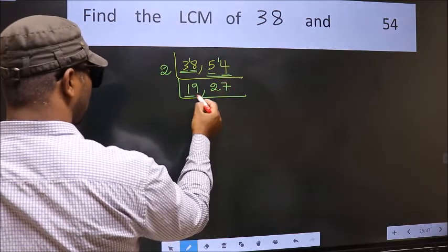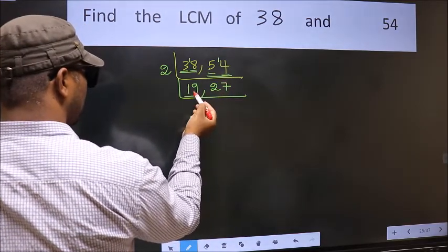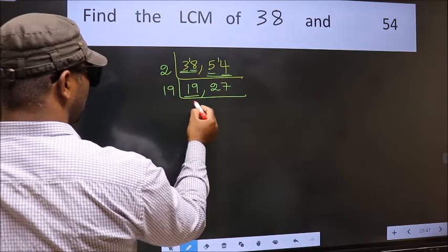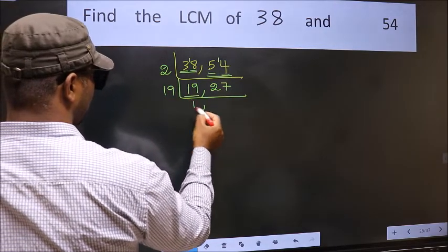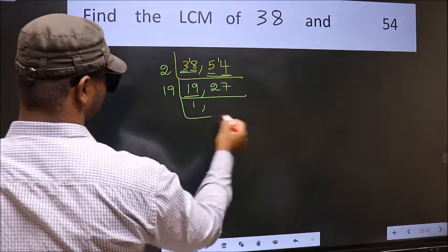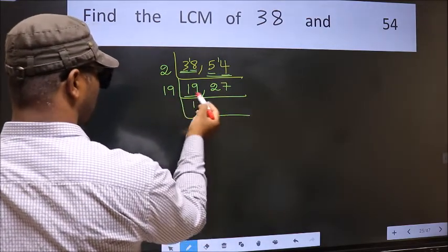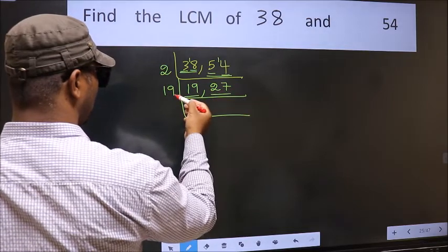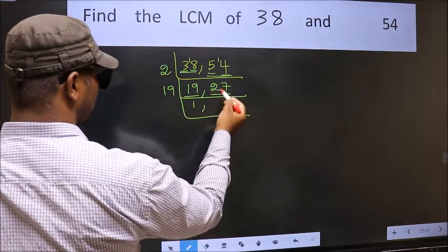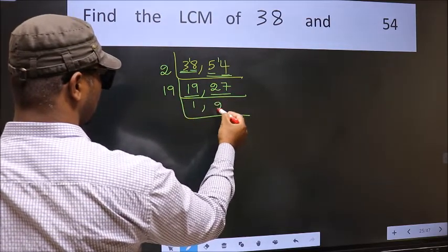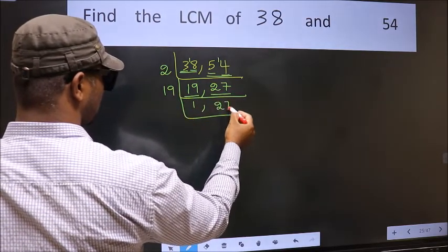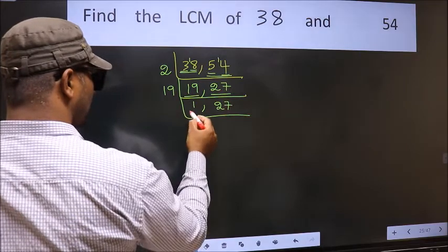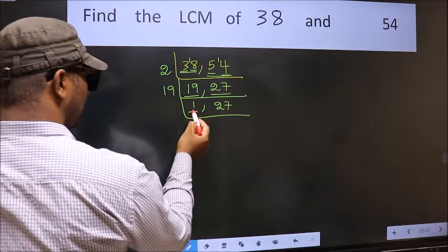Now we have 19. 19 is a prime number, so 19 ones are 19. The other number, 27, is not divisible by 19, so we write it down as it is. Now we got 1 here.